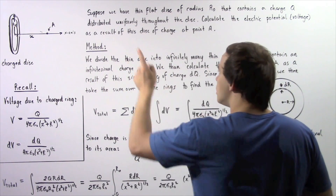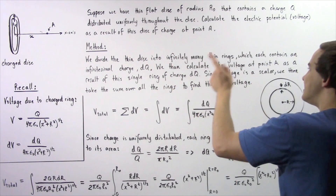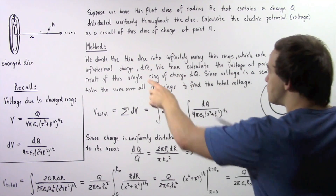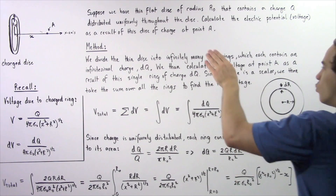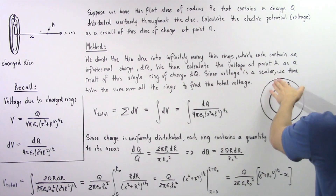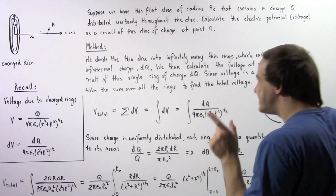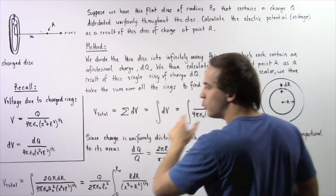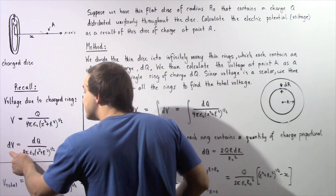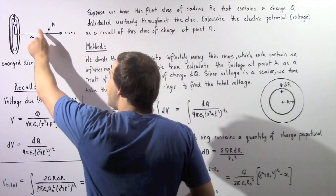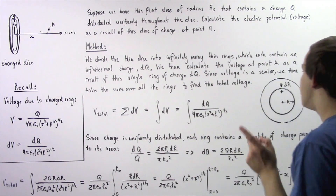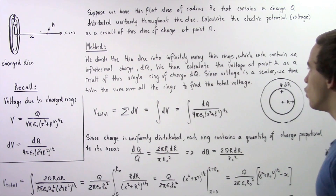We divide the thin disk into infinitely many thin rings which each contain infinitely small charge dq. We then calculate the voltage at point A as a result of this single ring of charge dq as shown in the following equation. This is our voltage at point A as a result of one such ring of charge that has a charge dq.